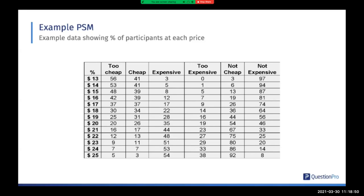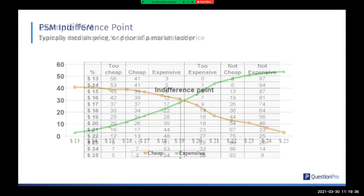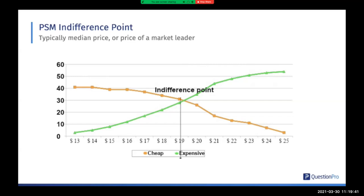We can either use a drop-down list for prices, which means we can control reversals, or ask people to type in the prices. The problem with the drop-down list is that we're giving a framework when one of the things we're trying to discover is the framework from the participants. We can get data like this — imagine I've collected data from 100 people. At $13, 56% said it was too cheap and they'd doubt the quality; 41% thought it was cheap and good value; 3% thought it was expensive but would consider it. As we go down the table, the price goes up, the number thinking it's cheap goes down, and the number thinking it's expensive goes up.